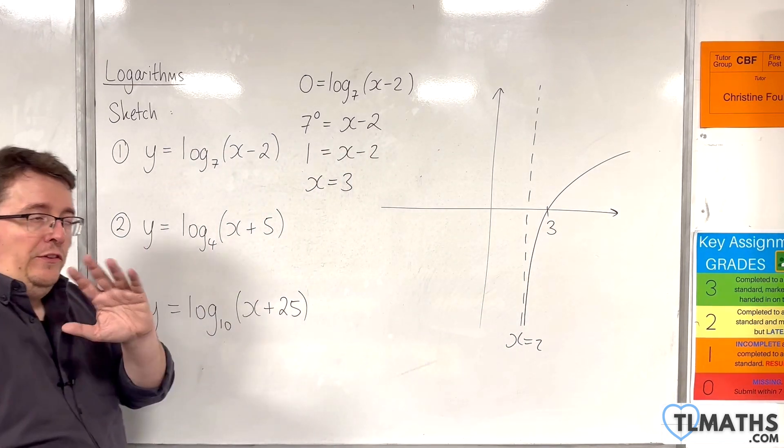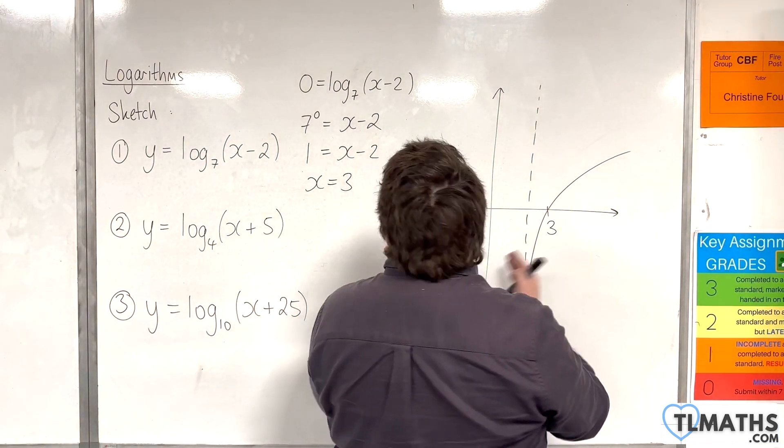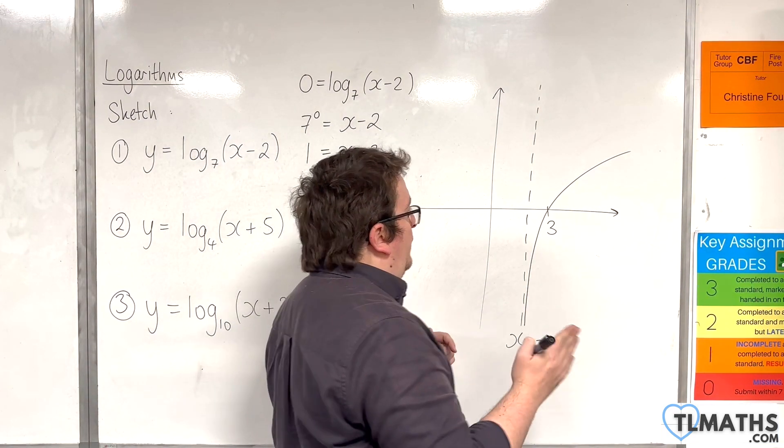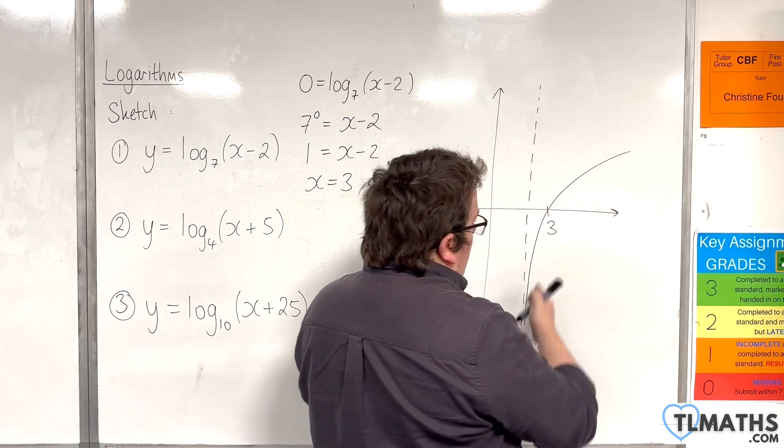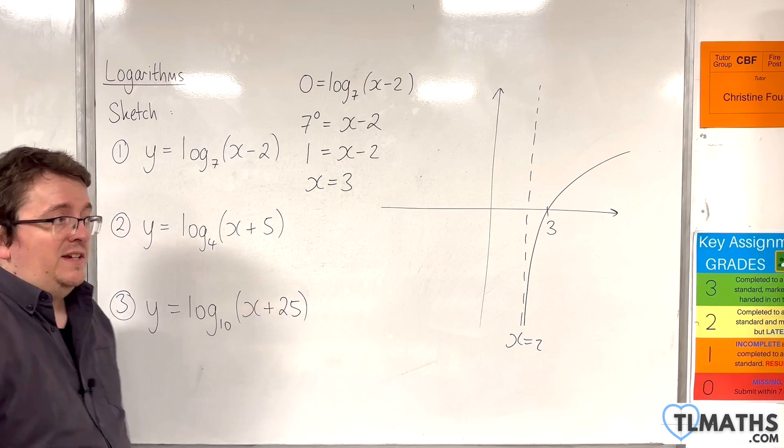Now a couple of things that could have shortcutted that there. The fact that we know it is just a translation of the log base 7 of x curve, so that means the point here is only going to be 1 away from the vertical asymptote.